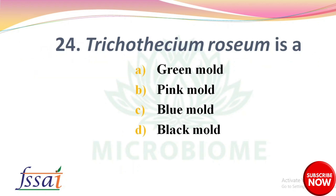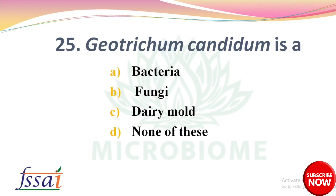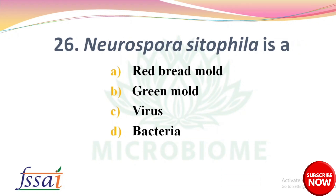Next: Trichothecium roseum is — options: green mold, pink mold, blue mold, black mold. The right answer is option B, pink mold. Next: Geotrichum candidum is — options: bacteria, fungi, dairy mold, none of these. The right answer is option C, dairy mold.